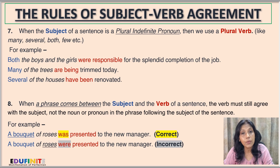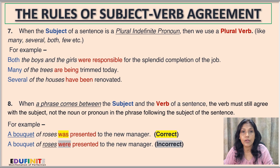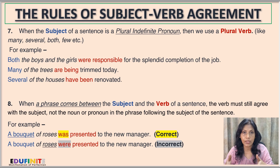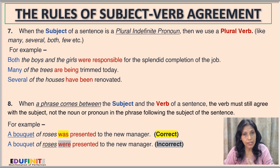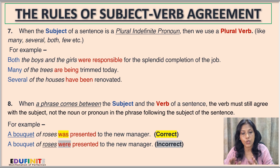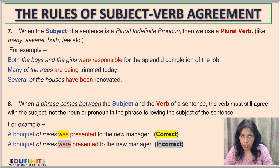'A bouquet of roses were presented to the new manager' is incorrect, because here we are mistakenly treating 'roses' as the subject and matching it with a plural verb. Since 'a bouquet' is the true subject and 'of roses' is just a phrase in between, we must ignore the phrase and choose the verb according to the actual subject.